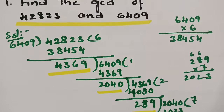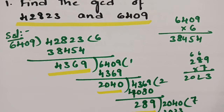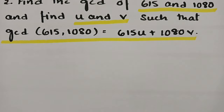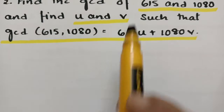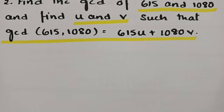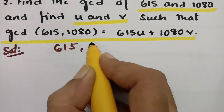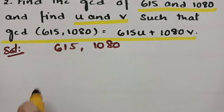Is it not simple? After the division, find the last non-zero remainder and take it as the GCD between the two numbers. The next equation is the second model: find the GCD between two numbers and also find the relation of U and V. First we make a division. The given numbers are 615 and 1080.